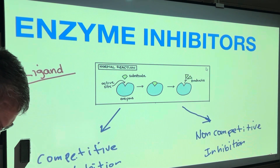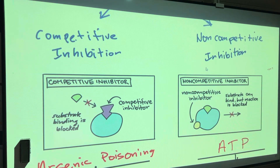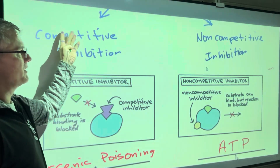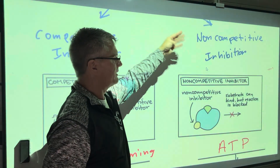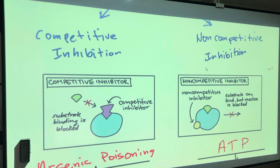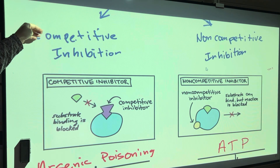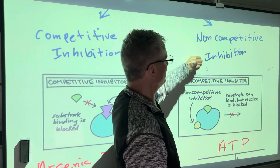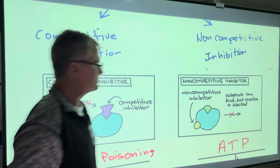When you hear ligand, don't let it fool you — it's just talking about a substrate. There are two types of inhibition: competitive inhibition and non-competitive inhibition. Competitive inhibition is competing to stop a reaction, and non-competitive inhibition is not competing to stop whatever chemical reaction we're looking at.